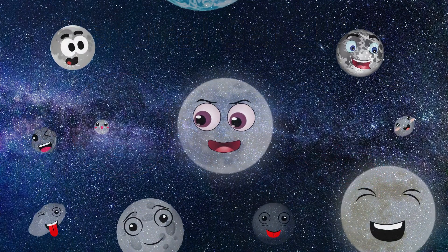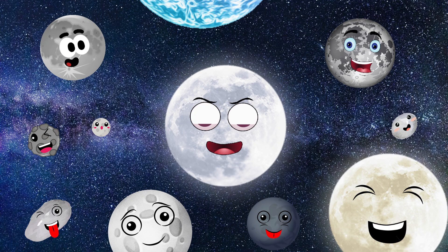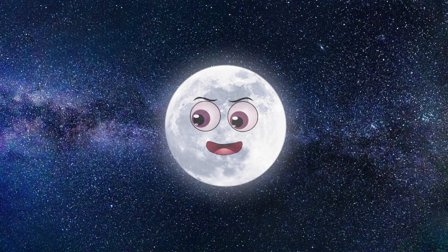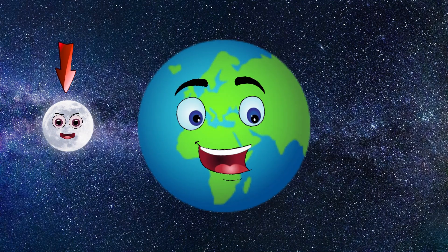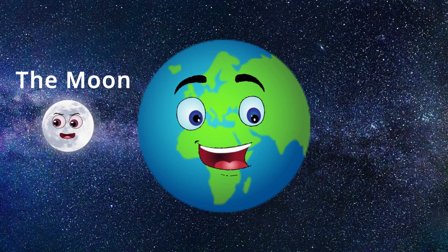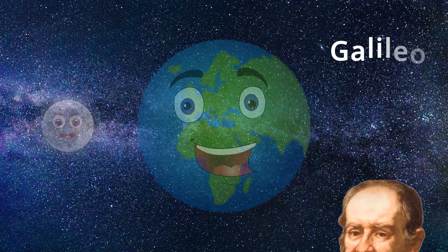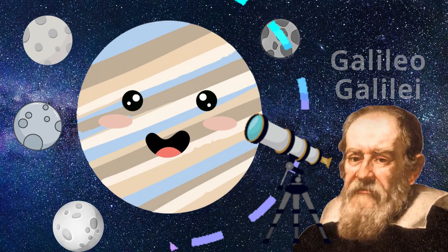There are hundreds of moons in our solar system orbiting planets, but only one of these moons calls our planet Earth home. Earth's only natural satellite is simply called the moon. This is because people didn't know other moons existed until Galileo Galilei discovered four moons orbiting Jupiter in 1610.